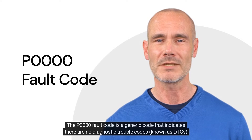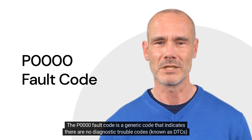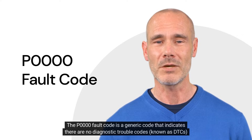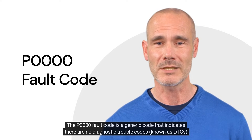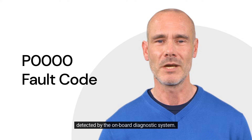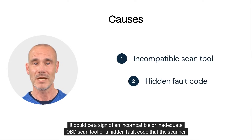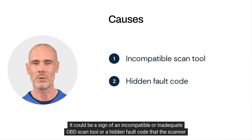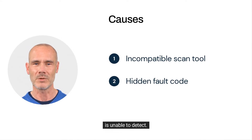The P0000 fault code is a generic code that indicates there are no diagnostic trouble codes, known as DTC, detected by the onboard diagnostic system. It could be a sign of an incompatible or inadequate OBD scan tool, or a hidden fault code that the scanner is unable to detect.